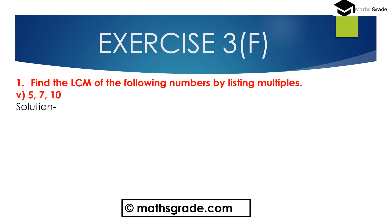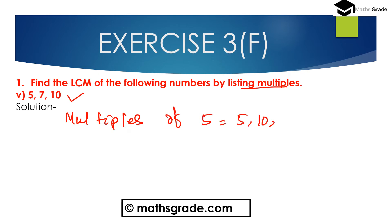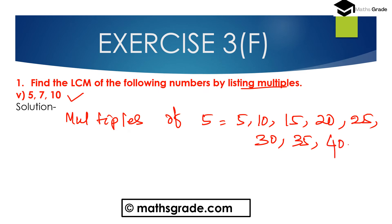Now question number 5: we have to find the least common multiple, that is LCM, of 5, 7, and 10 using the listing multiples method. So first find out multiples of 5, 7, and 10. Multiples of 5 are: 5, 10, 15, 20, 25, 30, 35, 40, and so on.